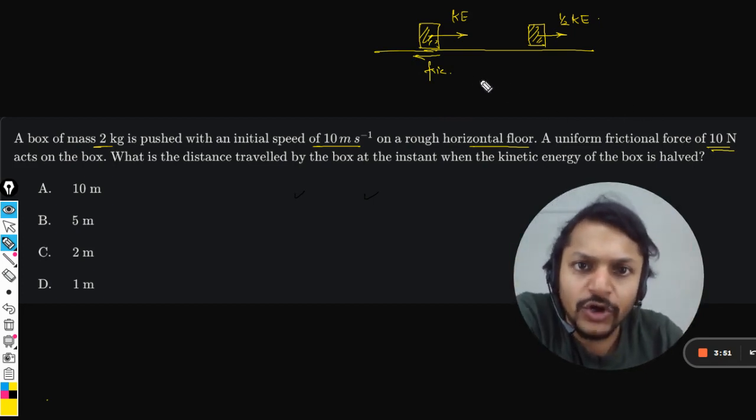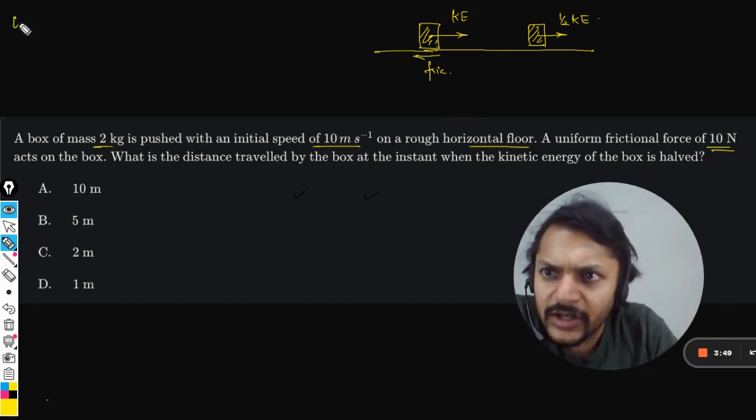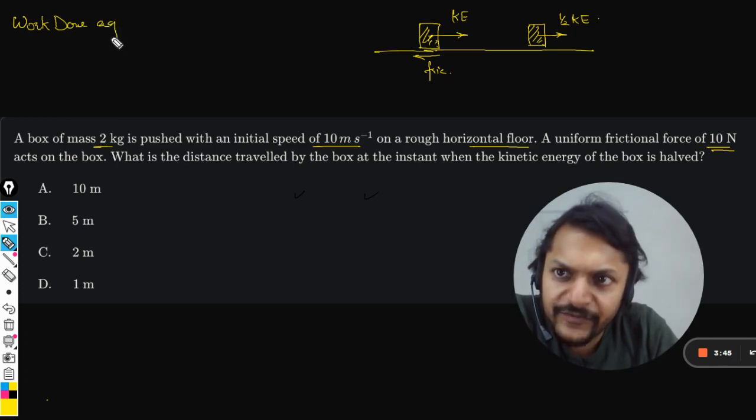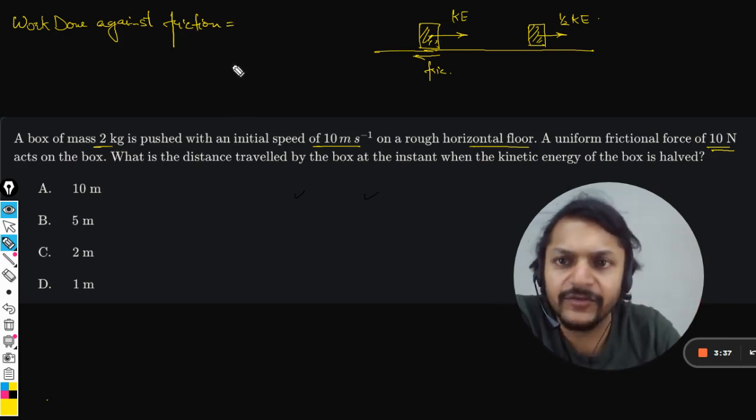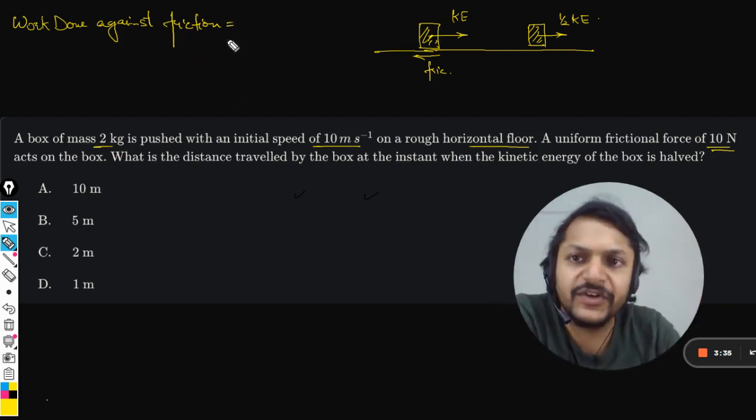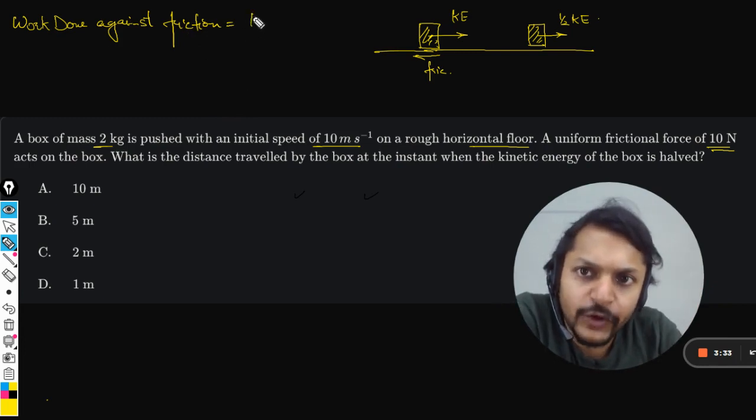So what is the work done against friction? We have to see what is the work done by friction, and the negative of it will be the work done against friction. The formula for this is F into S cos theta.